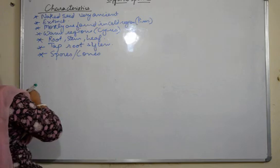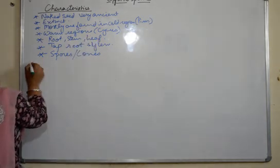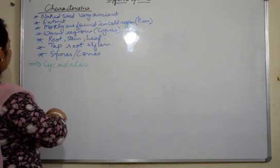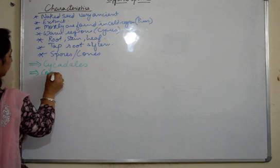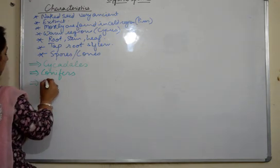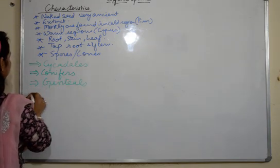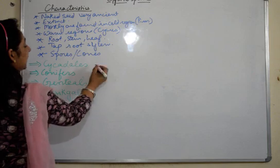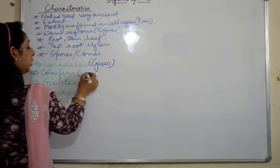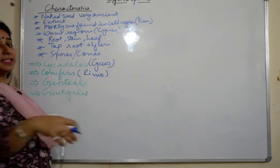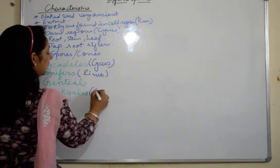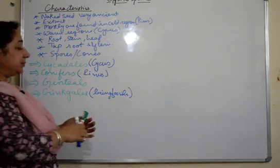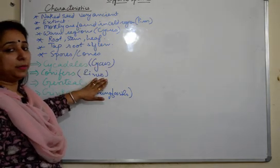There are four groups of gymnosperms. The first one is Cycadales — example is cycas. Then we have Conifers — example is pinus. Then we have Gnetales, and we have Ginkgales. Gnetales are extinct and Ginkgales are living fossils; they are the most ancient type. In our syllabus we have these two groups — cycas and pinus — which we will be doing in detail.